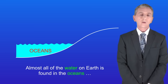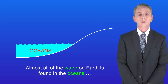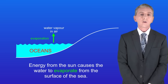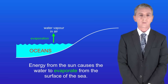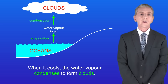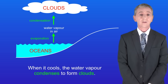Almost all of the water on earth is found in the oceans, and this is salt water. Energy from the sun causes the water to evaporate from the surface of the sea. The water vapor then travels into the air and cools down. When it cools, the water vapor condenses to form clouds.